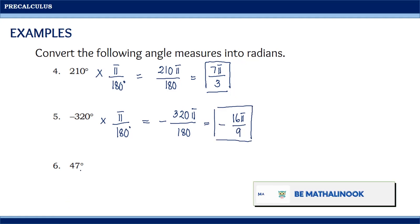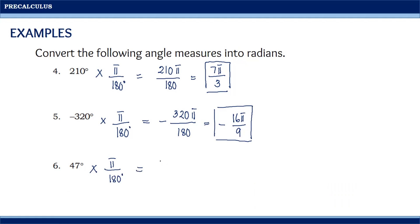Finally, for the last one, we have 47 degrees. Multiplying by π over 180 degrees, we get 47π over 180. Since there is no common factor between 47 and 180, this is already the final answer — the radian measure of 47 degrees.